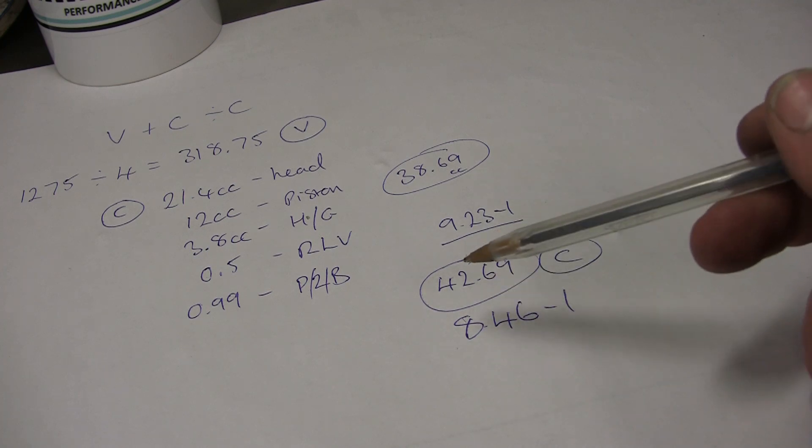I hope you found that useful. As you can see, once you've got the figures, it's dead easy to work out. If you're not sure on any of the head gasket volumes, they're easy to find online for common head gaskets. Same goes for common pistons—the piston dish volumes are easily available.